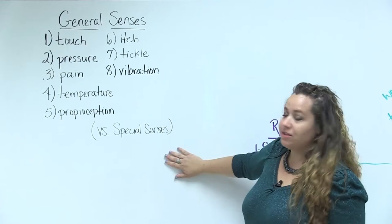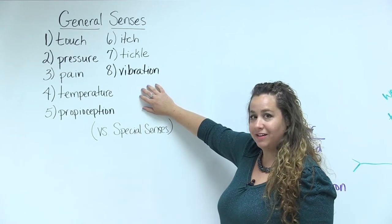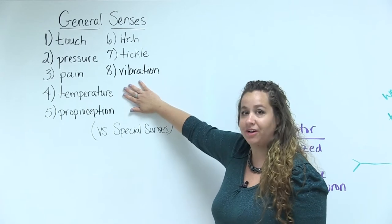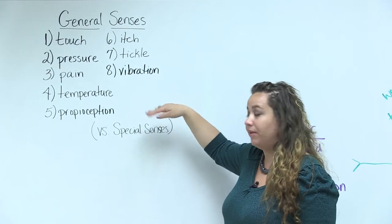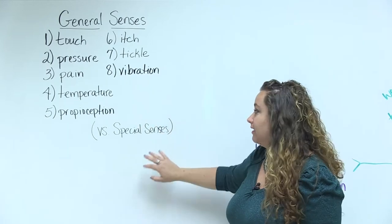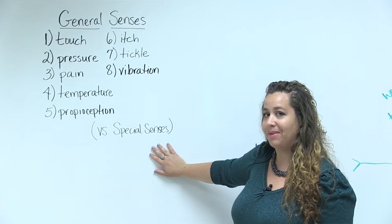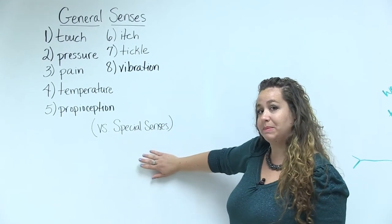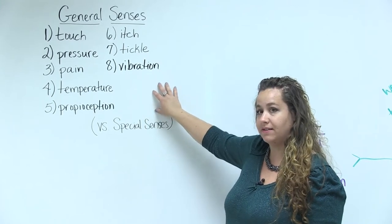These differ from special senses because you can sense the general senses from most parts of the body. For example, if you want to tell the temperature of a particular liquid, you can put your finger, your toe — you can also tell temperature with your forehead, which is very different than the special sense of sight. You can only see with your eye. So general senses are very different from special senses. In today's lecture, we're going to focus just on the general senses.